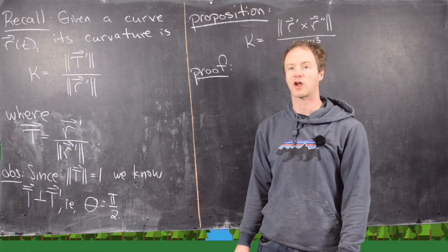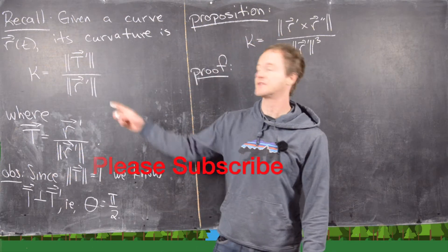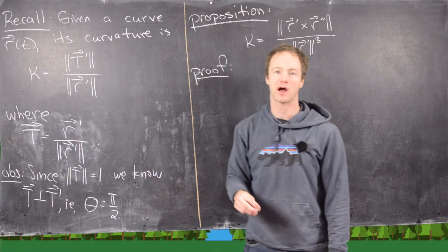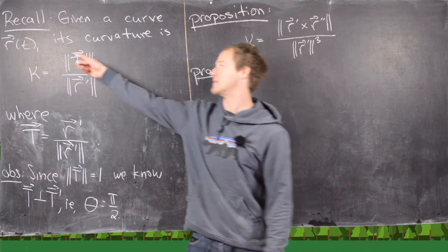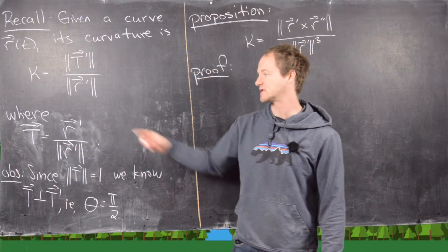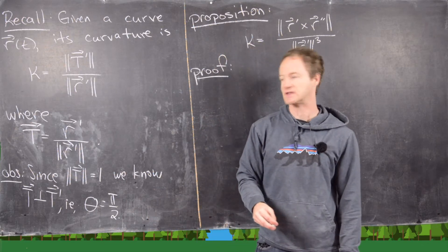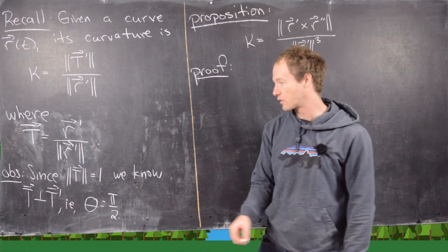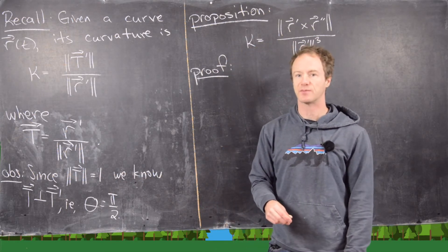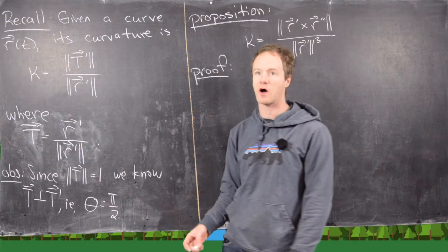In this video we're going to look at another formula for the curvature of a vector valued function. Recall from the previous video: if we have a vector valued function r(t) defining a curve in dimensional space, its curvature kappa is given by the magnitude of T' divided by the magnitude of r', where T is r' divided by the magnitude of r' — the unit tangent vector. Since the magnitude of T is one, T is orthogonal to T', meaning the angle between T and T' is π/2.